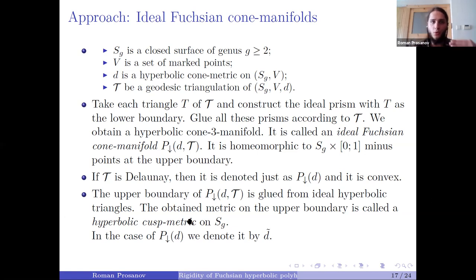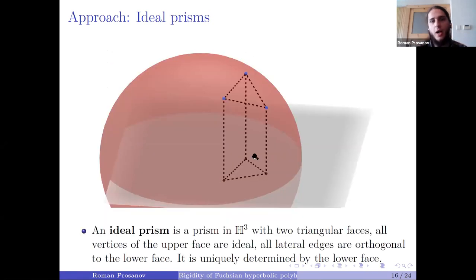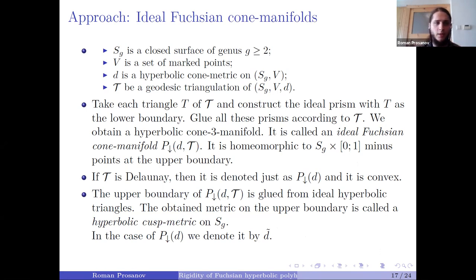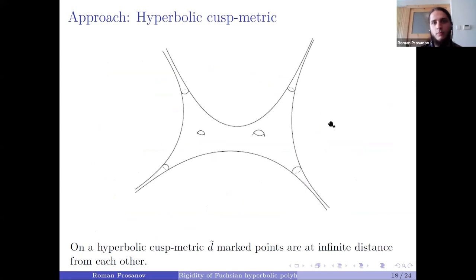At the lower boundary, when I glue everything, I obtain my surface with the initial metric d. At the upper boundary, instead of gluing hyperbolic triangles I glue ideal hyperbolic triangles, so I obtain a hyperbolic cusp metric at the upper boundary. It is a complete hyperbolic metric on a punctured surface such that the marked points are at infinite distance and are deleted from the surface.